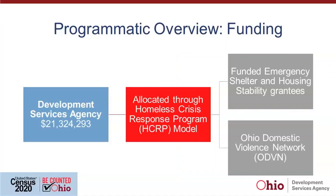The Homeless Crisis Response Program is the vehicle we're using to get the funds awarded — that's the quickest way we have to get money out on the street. This first phase of the CARES Act money, we want to get out as quickly as we can. We don't even have the money from HUD yet, but we want the money to be out on the street where they need it right now. Through that, we will fund all the existing HCRP grantees along with the Ohio Domestic Violence Network, as I mentioned earlier.